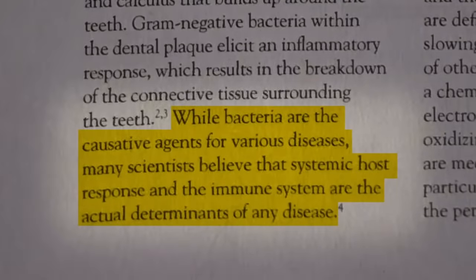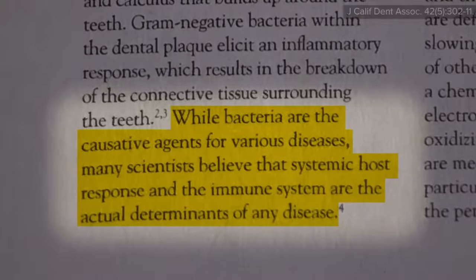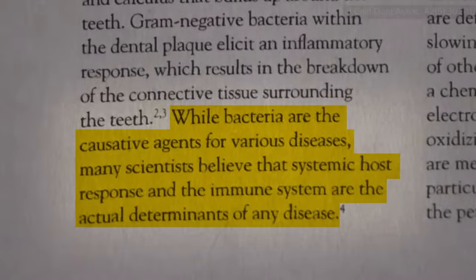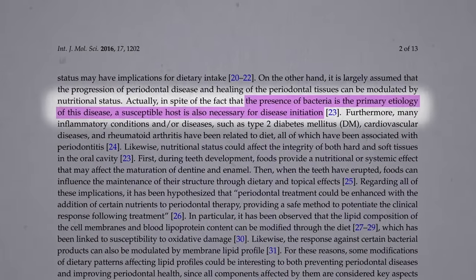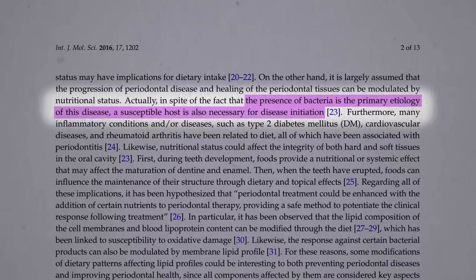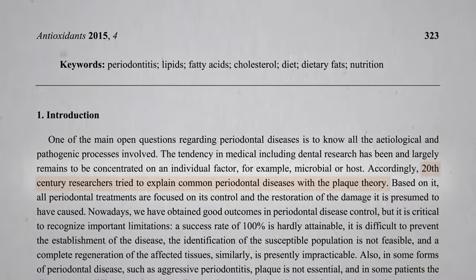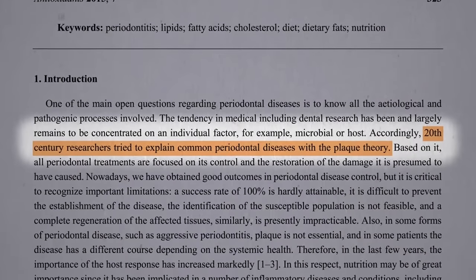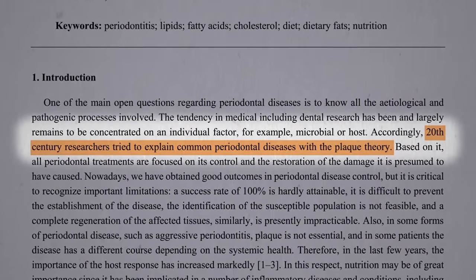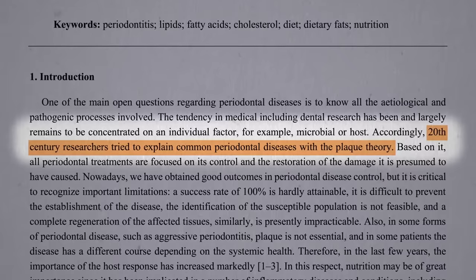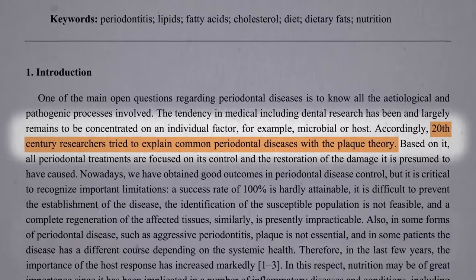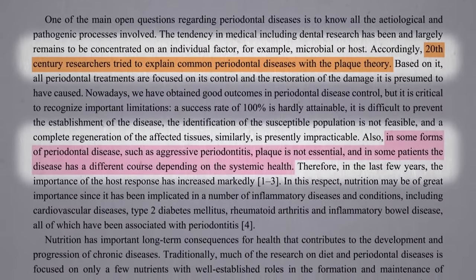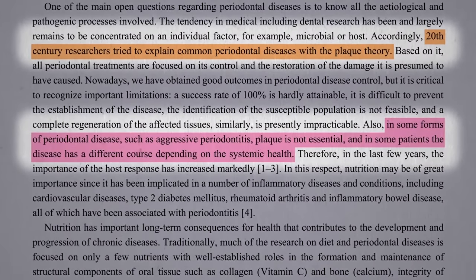Like most infections, how our body responds may play a critical role. Yes, the presence of bacteria is the primary cause, but a susceptible host is also necessary for disease initiation. The standard explanation of periodontal disease is the plaque theory. The buildup of plaque leads to gingivitis — gum inflammation — which leads to periodontitis, inflammation lowered down beneath the gums. But in some forms of periodontal disease, plaque doesn't appear to play a critical role.